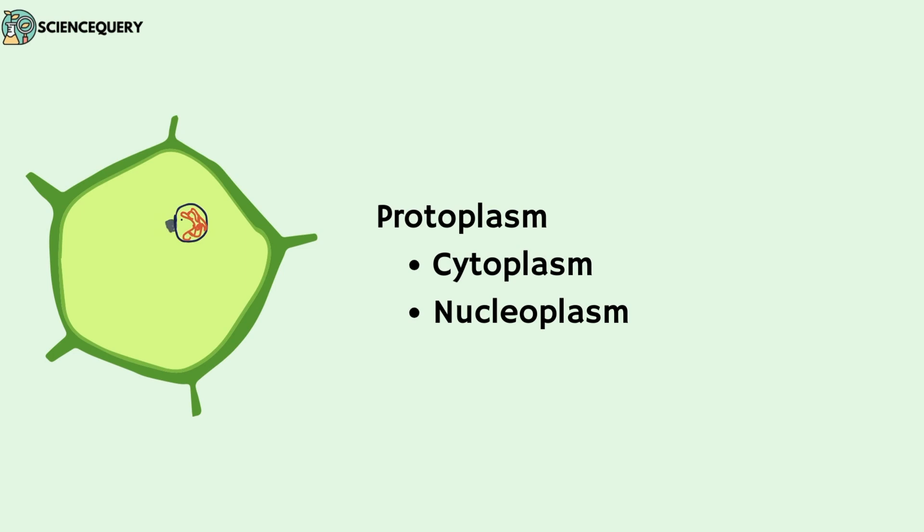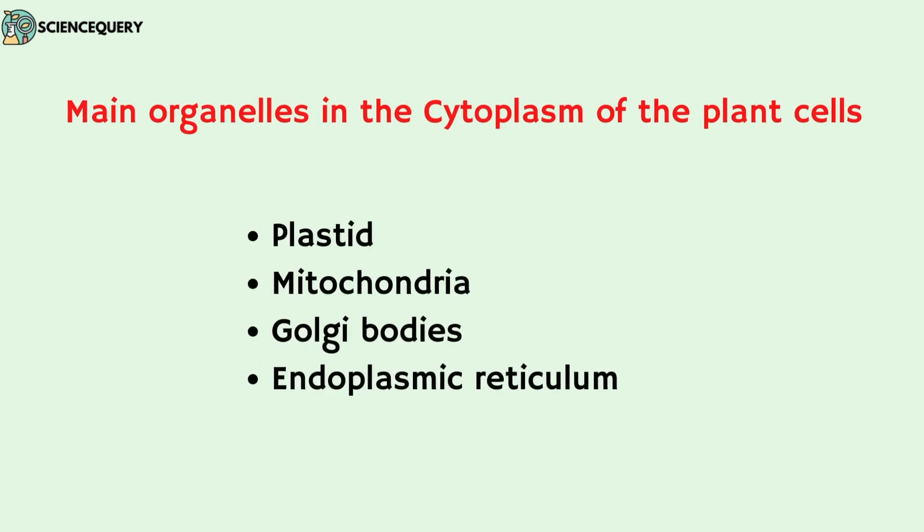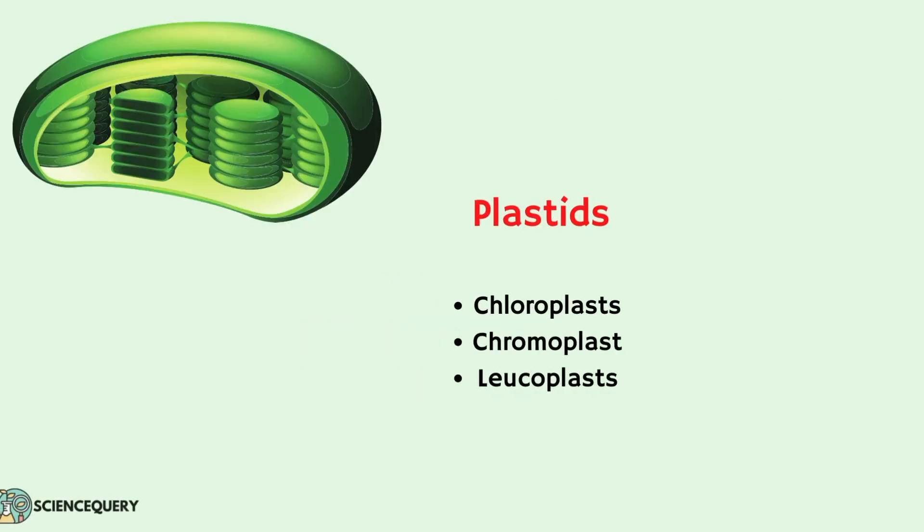The protoplasm of the plant cell consists of two major parts that is the cytoplasm and the nucleoplasm. The main organelles in the cytoplasm of plant cells are plastids, mitochondria, Golgi bodies and endoplasmic reticulum. The plastids are further divided into chloroplast, chromoplast and leukoplast.